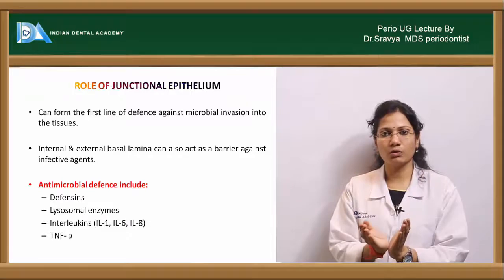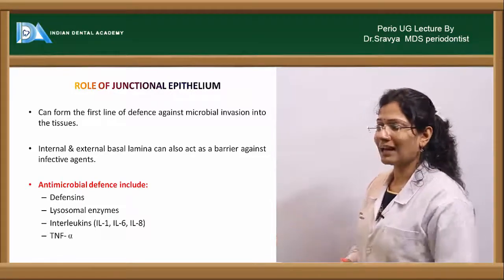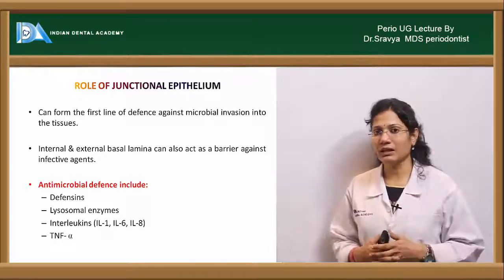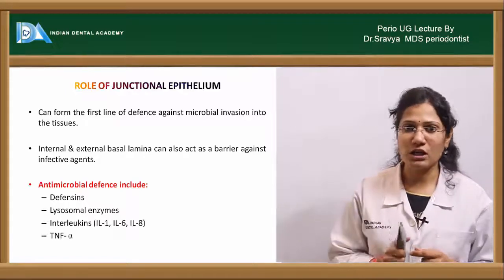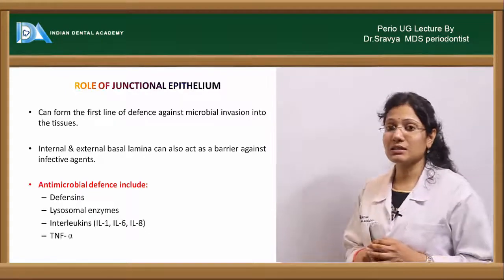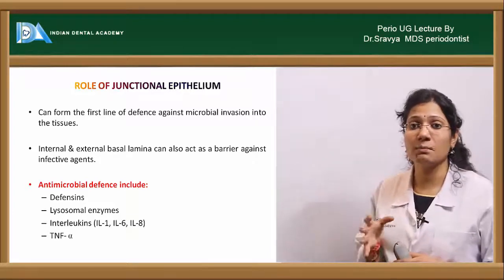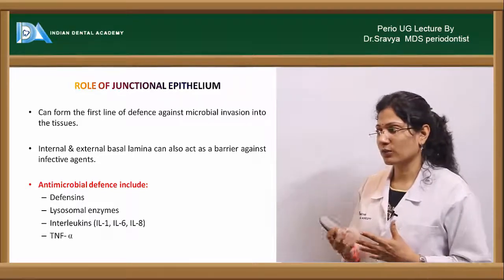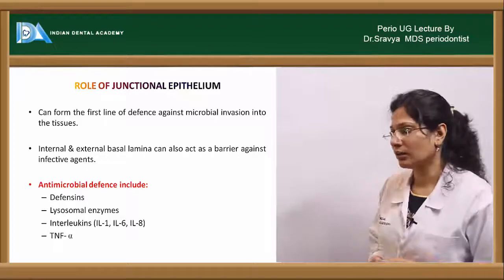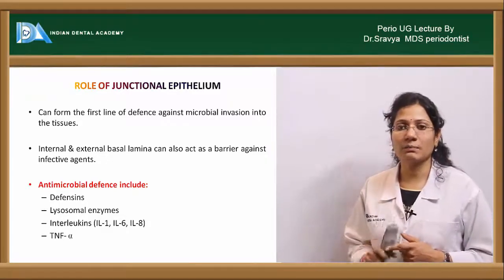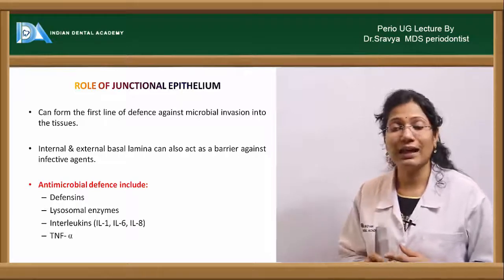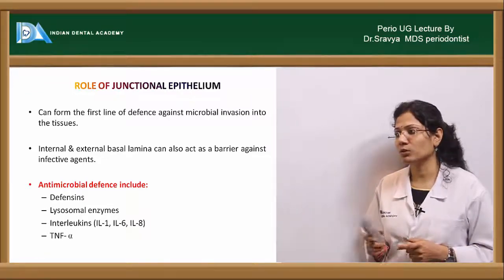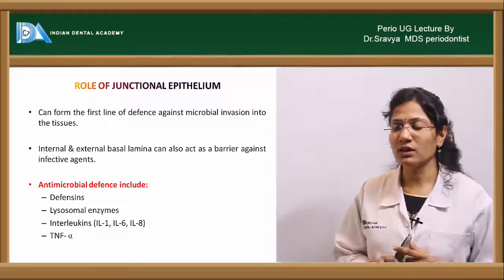The junctional epithelium also has the property to release antimicrobial peptides called defensins, which can combat infectious agents. Apart from that, it has the capacity to release lysosomal enzymes and inflammatory mediators such as interleukin-1, interleukin-6, interleukin-8, and tumor necrosis factor alpha.